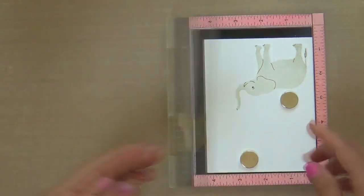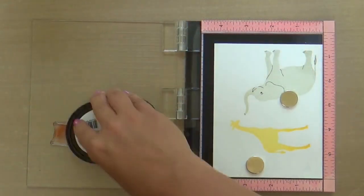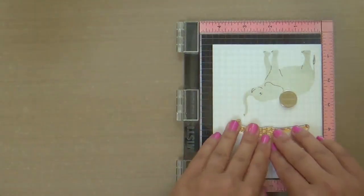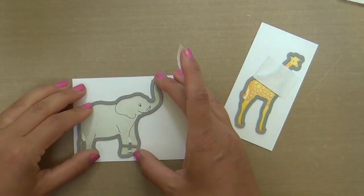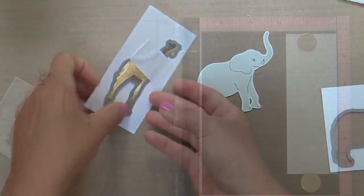I believe that is caramel toffee for the detail of the giraffe. Then I'll take the coordinating dies and die cut these sweet little animal images out.